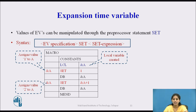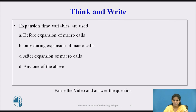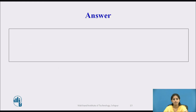This is how we create local and global expansion time variables. Quiz: expansion time variables are used — before expansion of macro calls, only during the expansion of macro calls, after expansion of macro calls, or any one of the above? Pause the video and think. The answer is: expansion time variables are used only during the expansion of macro calls.